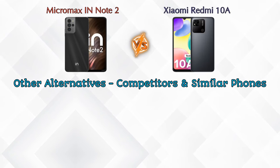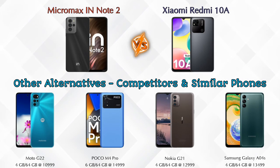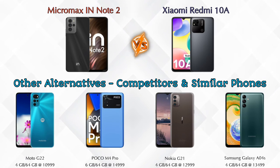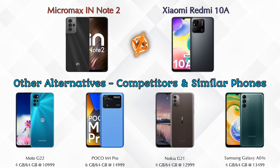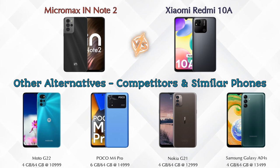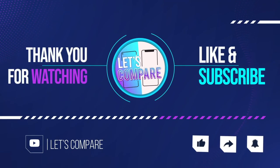If you're looking at other competitors at the same price, the first is the Moto G22 4G, second is the Poco M4 Pro, third is the Nokia G21, and the last is the Samsung Galaxy Euro 4S. Details about all these competitor phones are available in the description. If you liked our video, please like and subscribe. Thanks for watching.